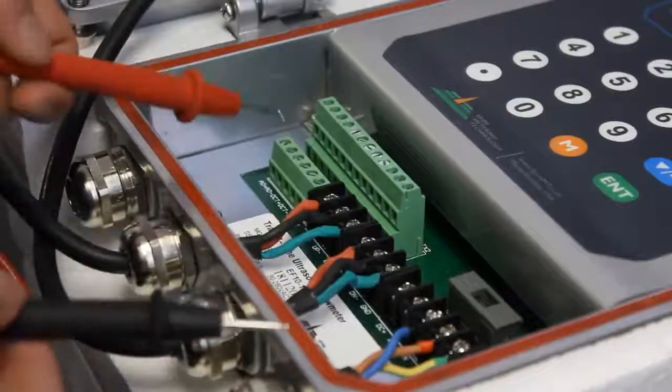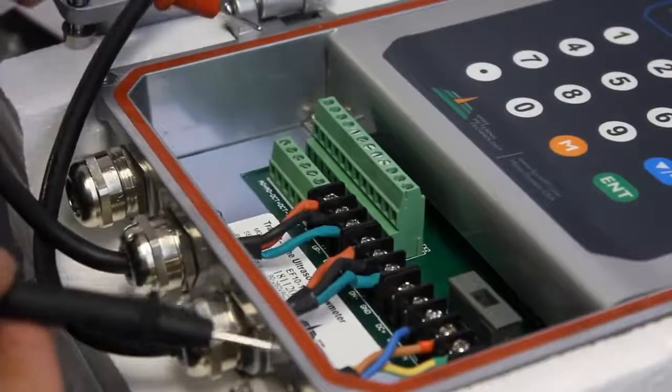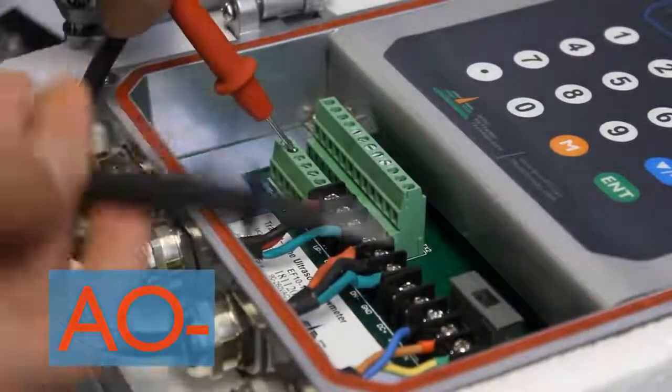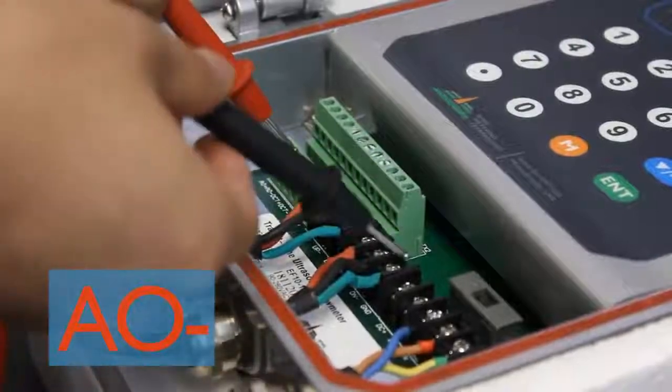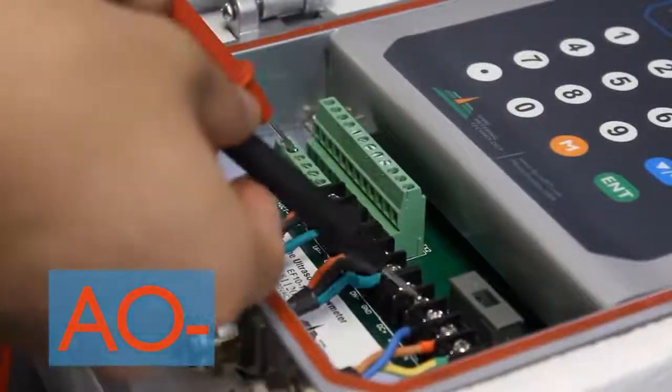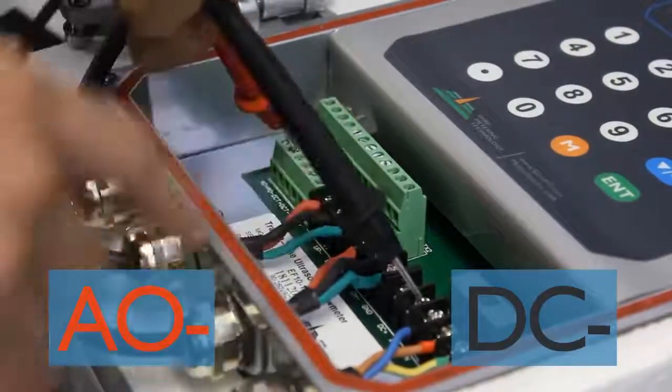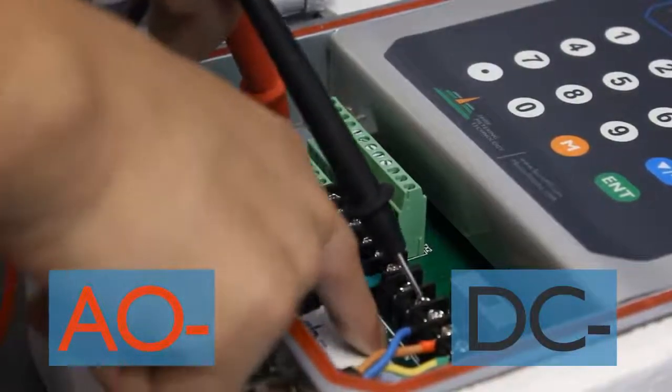Make sure the red lead, or the positive one, is plugged onto the AO+, and the black lead is on the DC-. The AO+ and DC- will be shown down here.